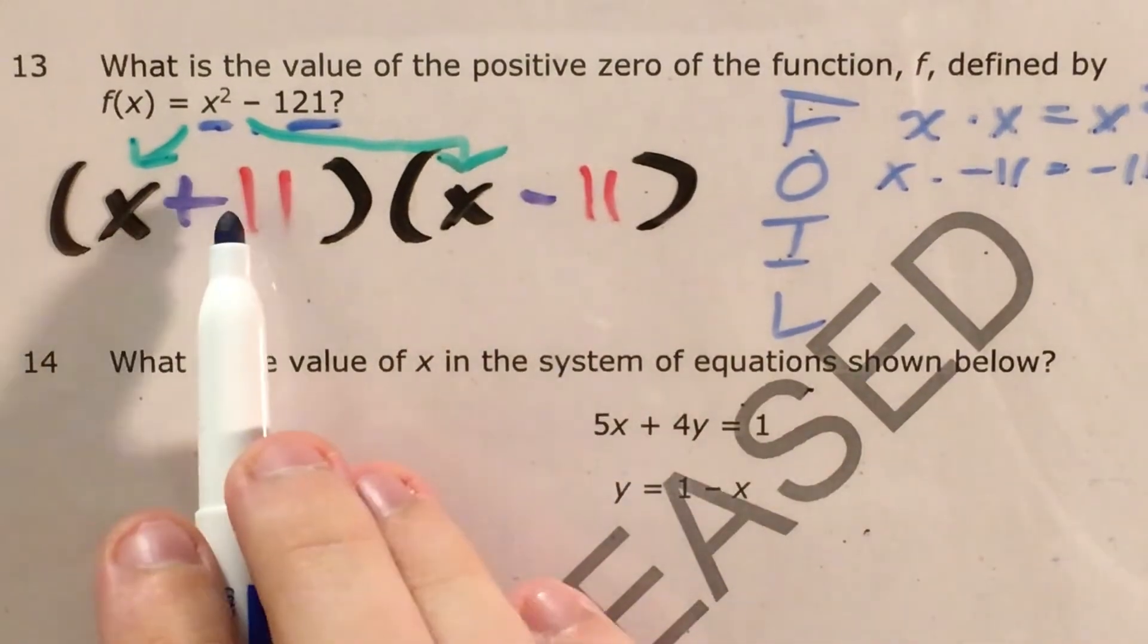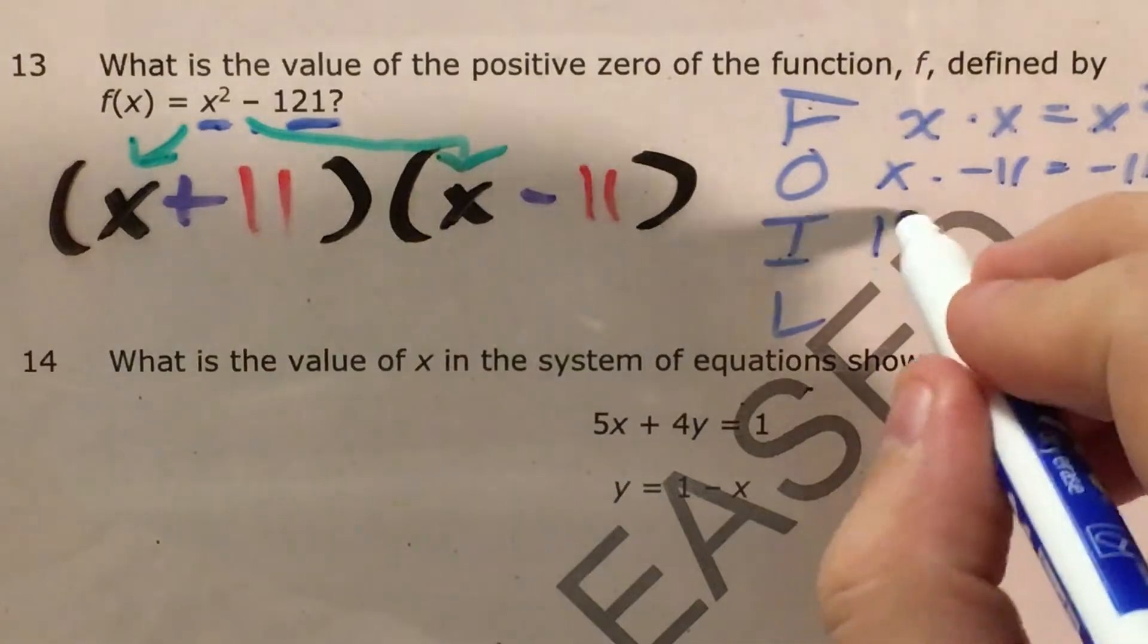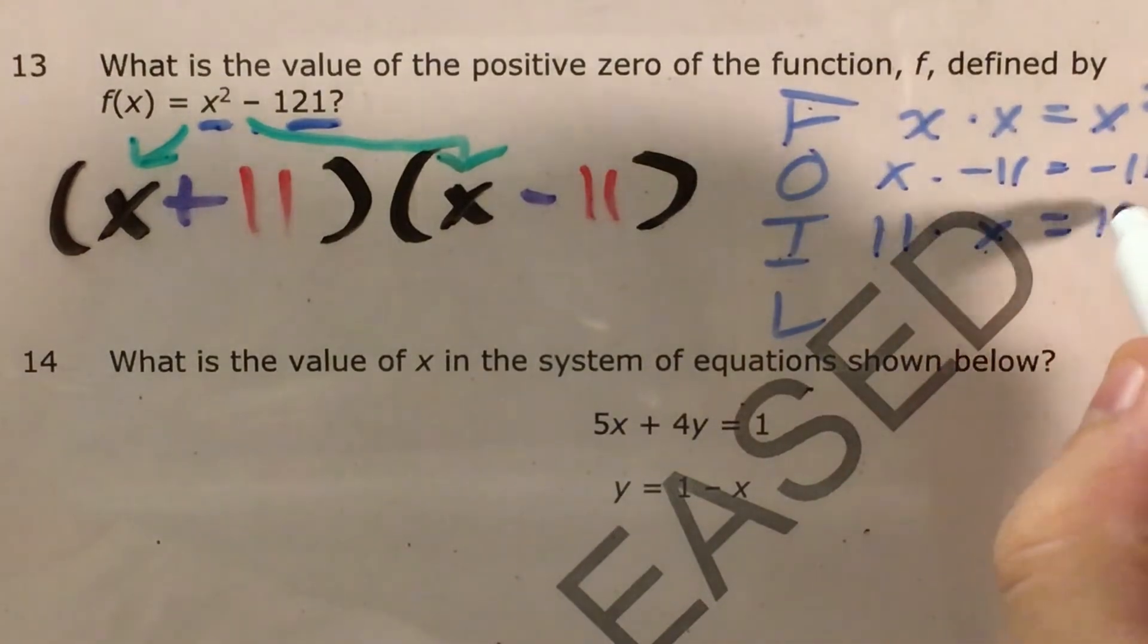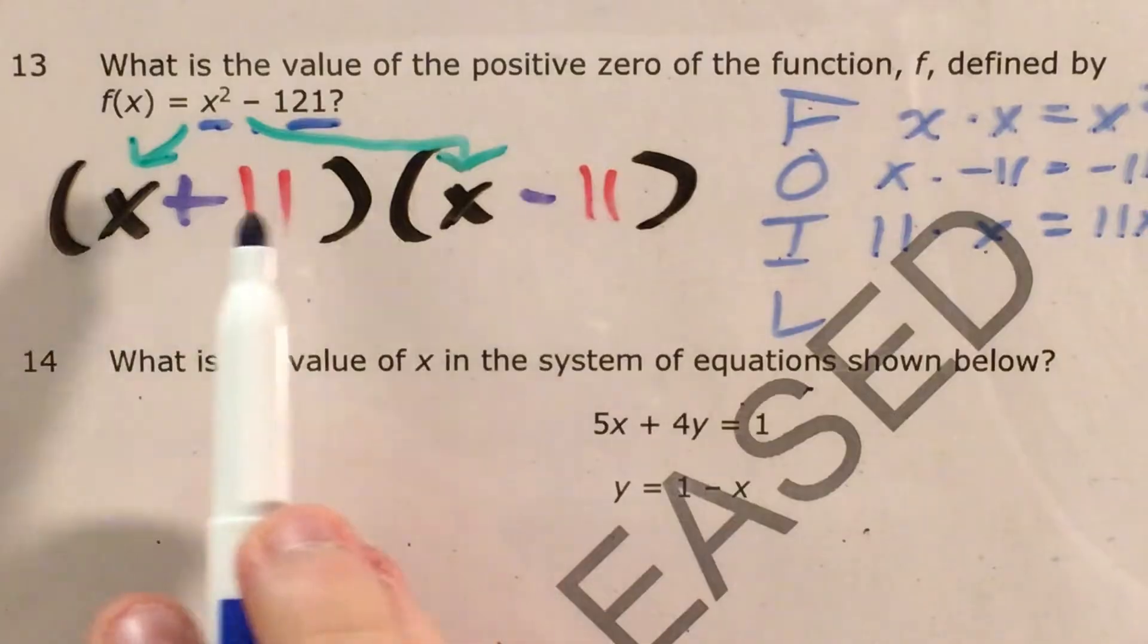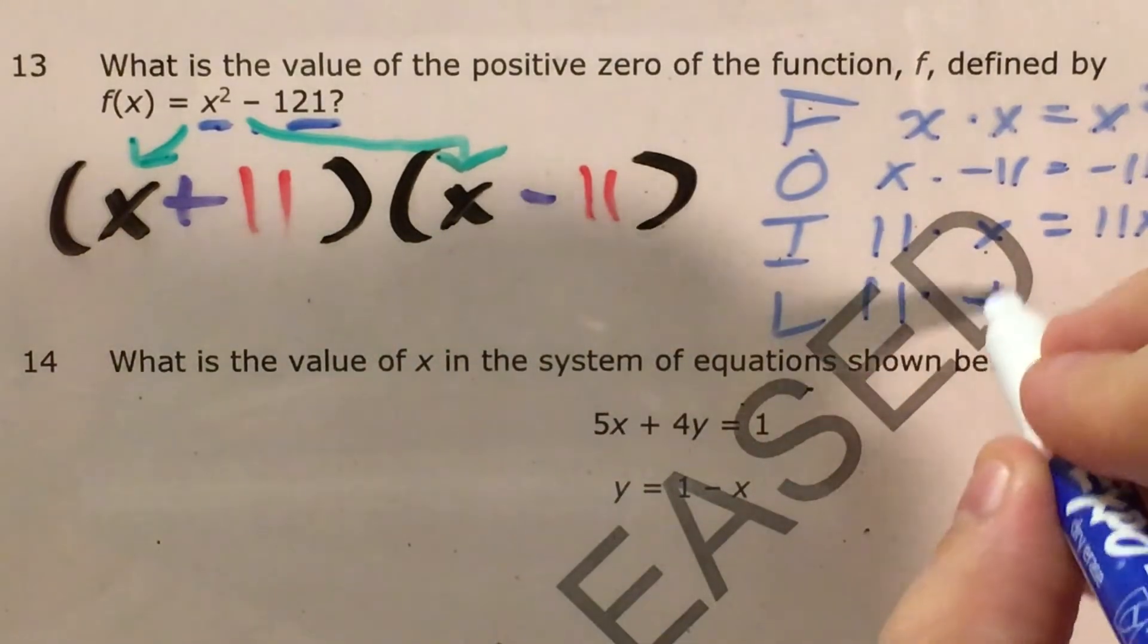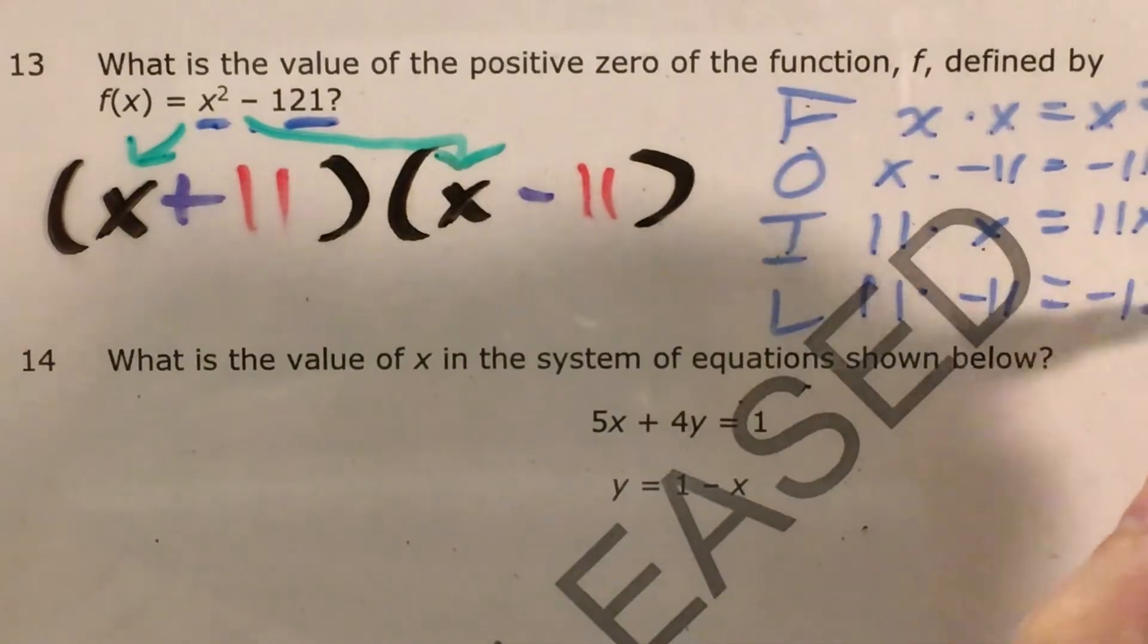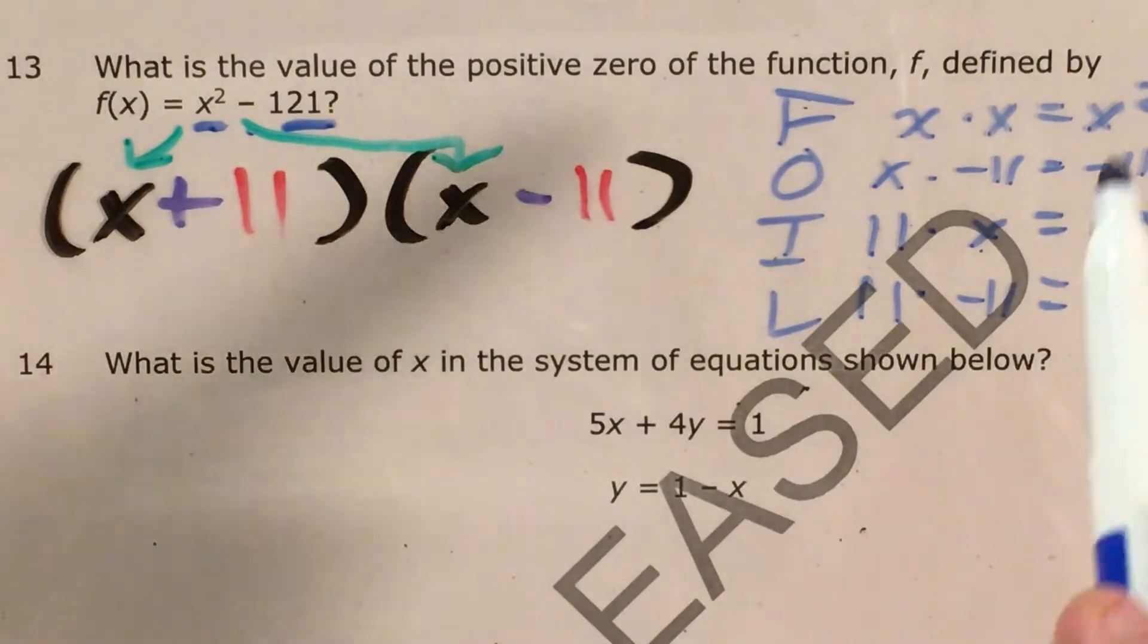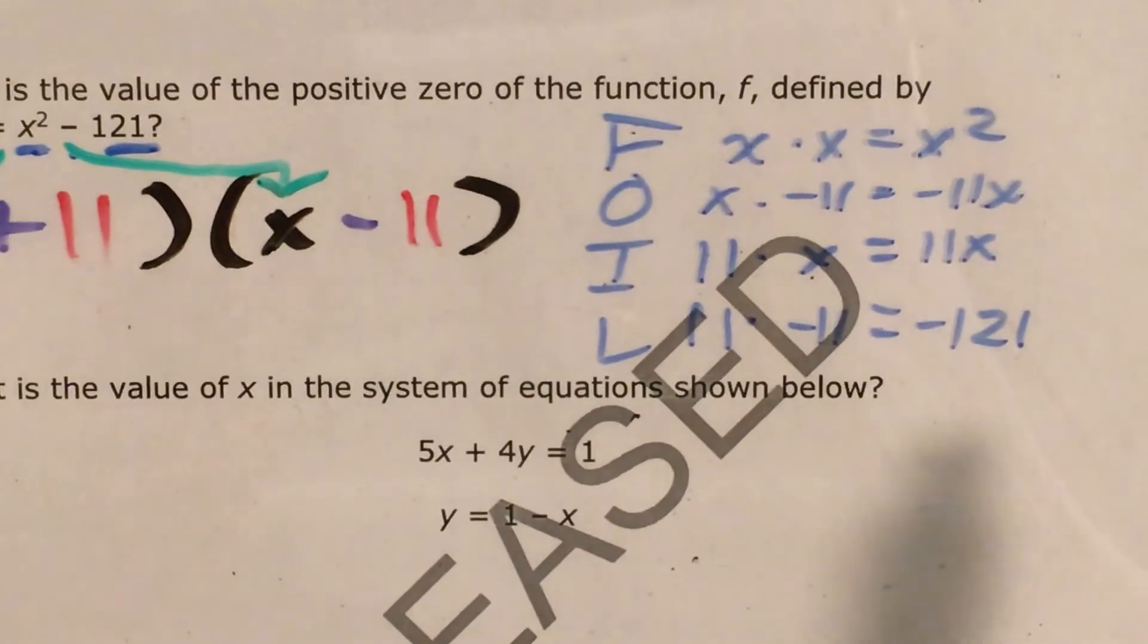I for inside, plus 11 times x would give me positive 11x. And then finally for last, that's plus 11 and minus 11. 11 times negative 11 equals negative 121.